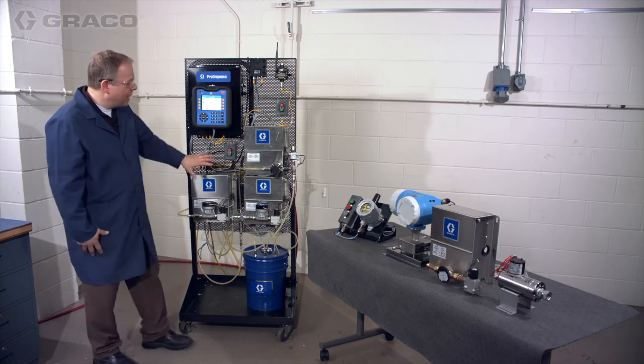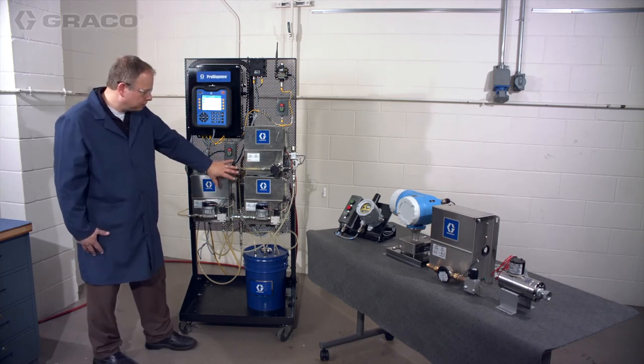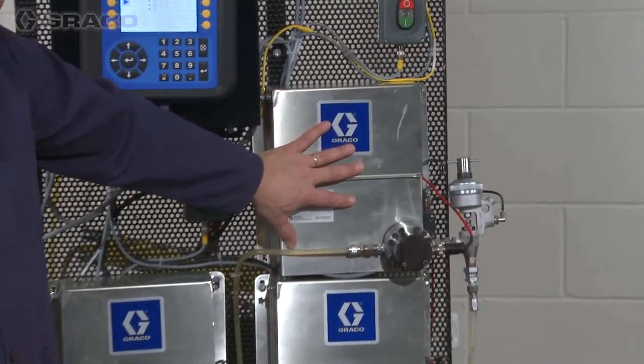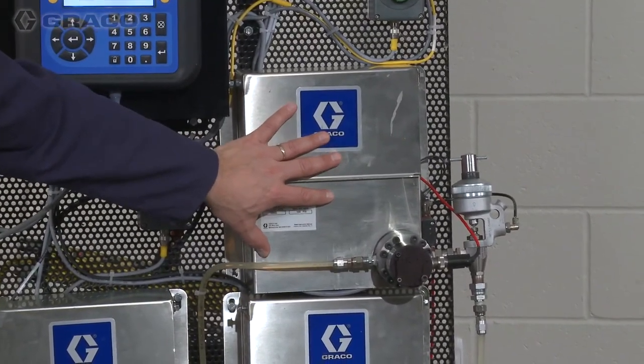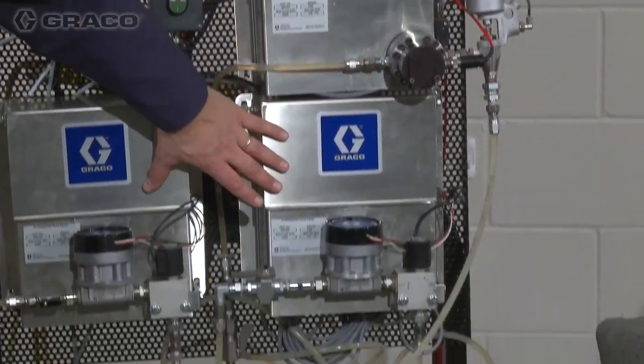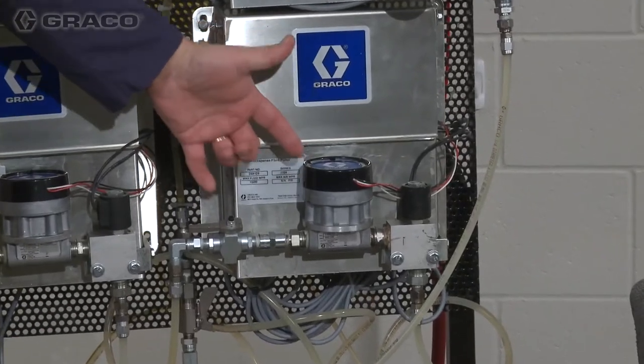I want to talk a little bit more about the fluid panels. As you can see, I have three styles here. We have the G3000 meter, which is typically going to be used for paints. Down here I have a couple oil meters, different style of meter.